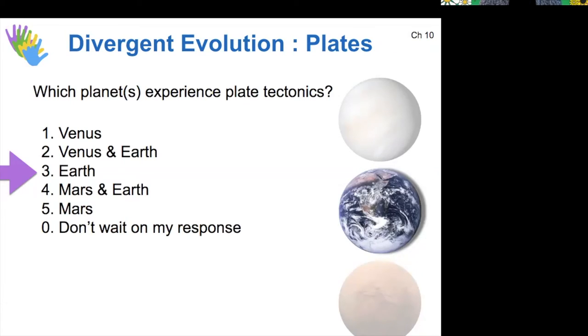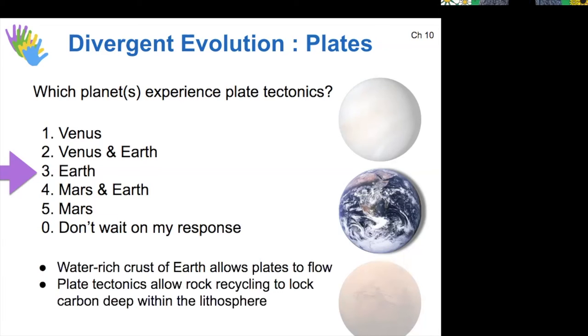Okay, so we mentioned that there is a reason why Earth is the only one to have plate tectonics. It has enough water in its crust to allow the plates to flow. So it seems that Earth's plentiful oceans are the reason that we have tectonic plates. This is also really important from a climate perspective because plate tectonics is the way that rock from the surface that captures CO2 from weathering can lock that carbon deep within the lithosphere, the rock sphere. So this is an important mechanism for locking away carbon dioxide.